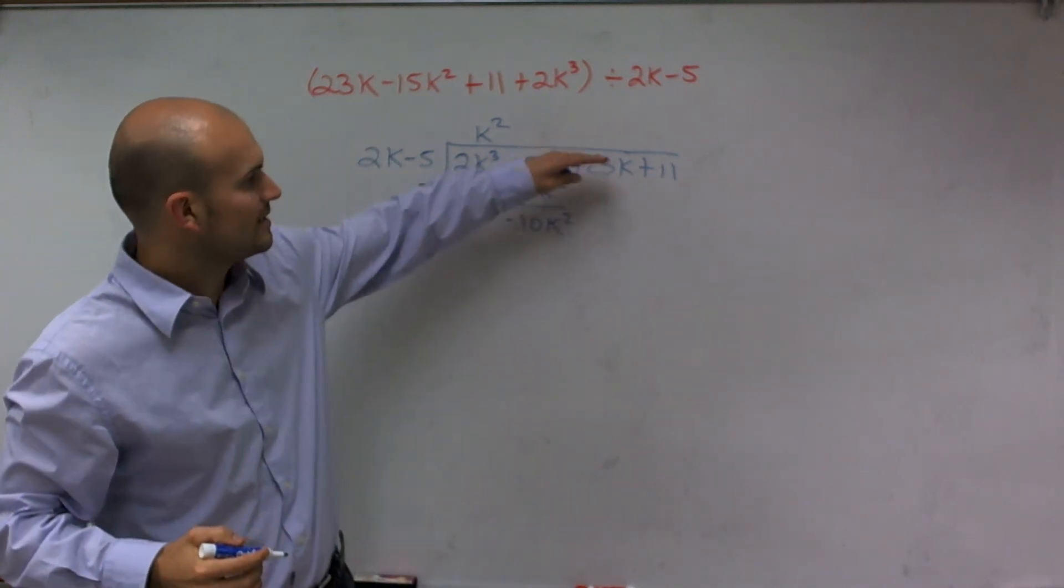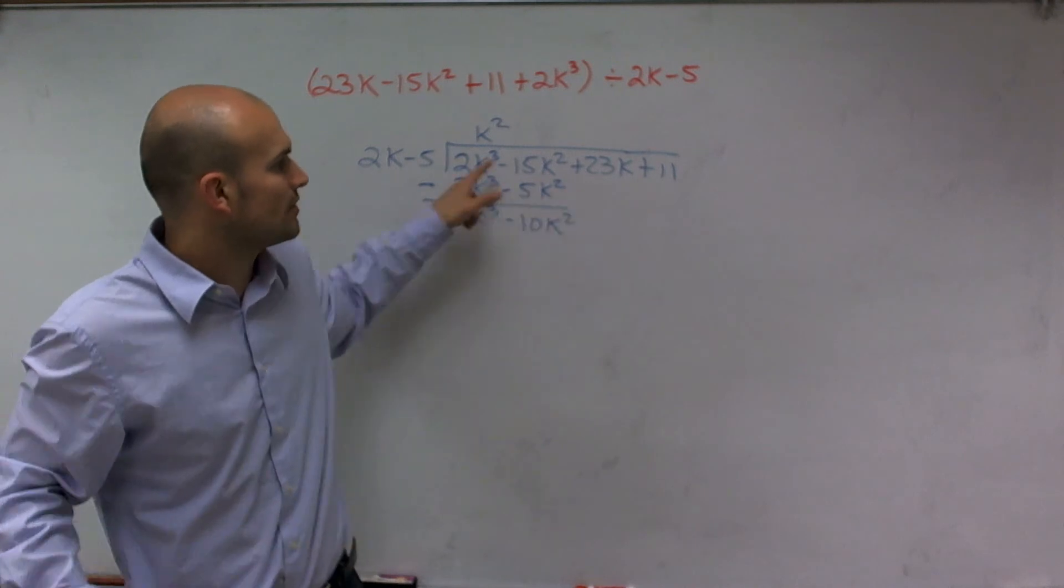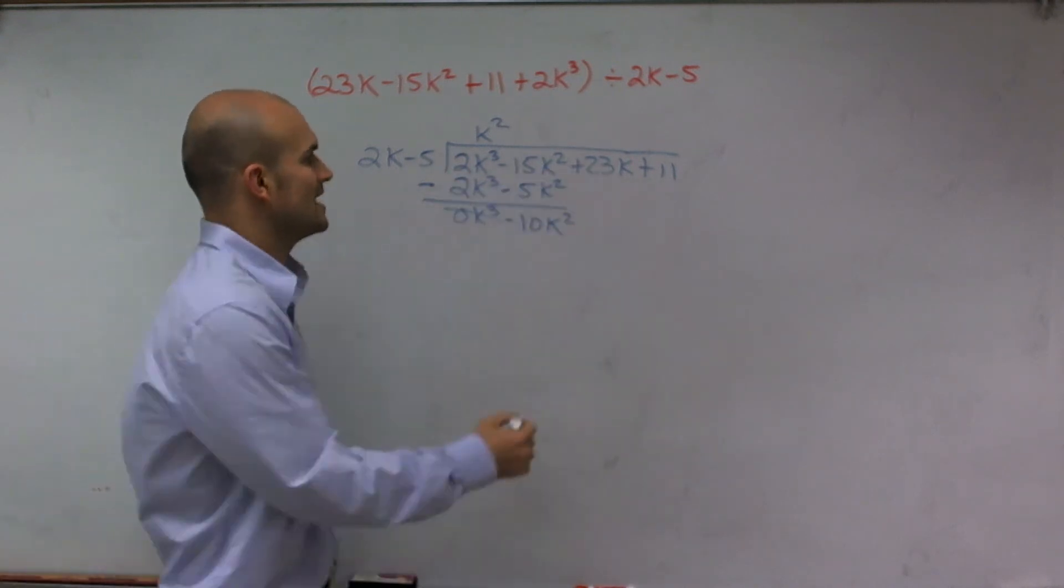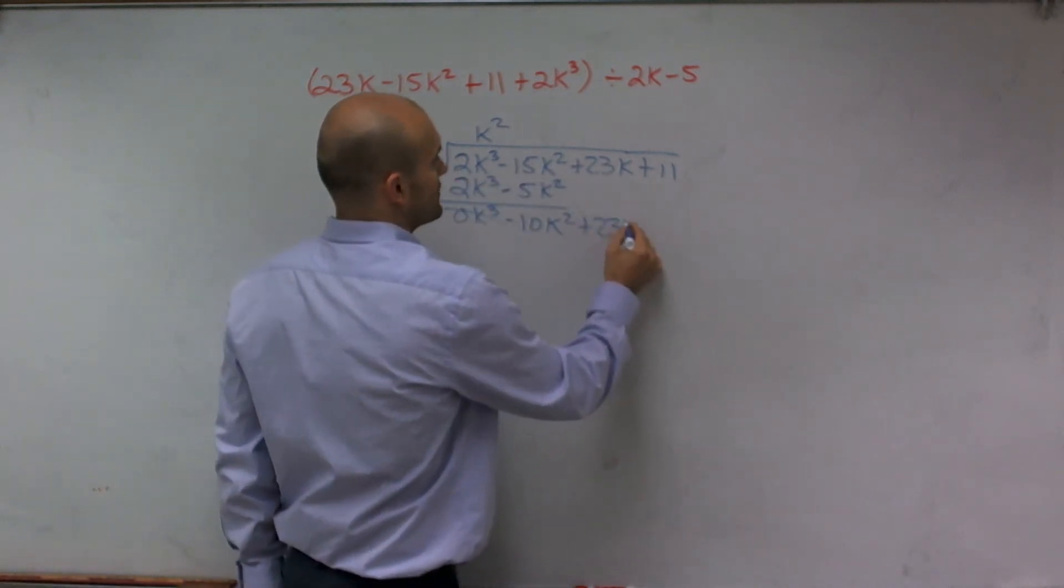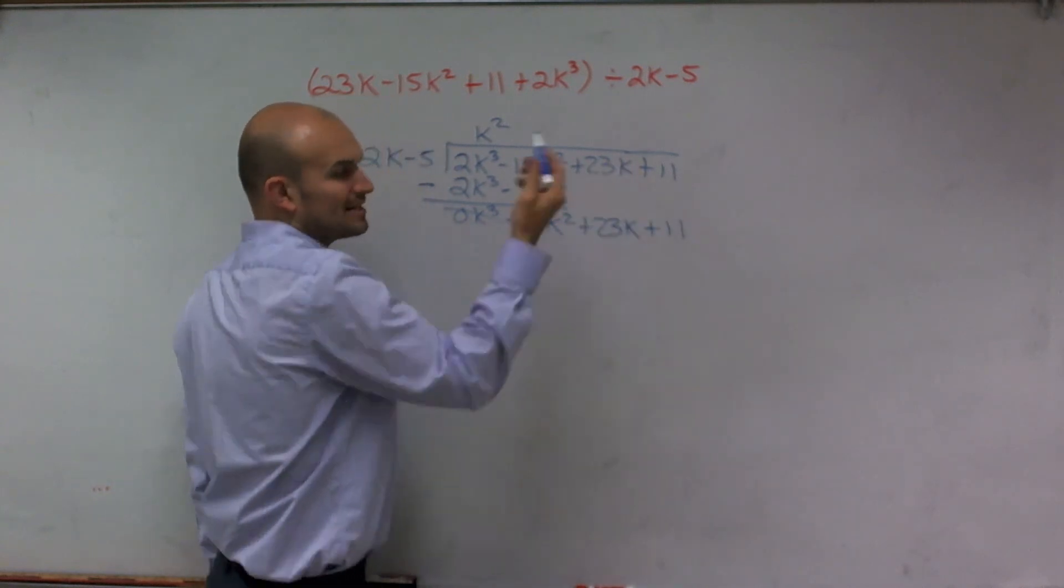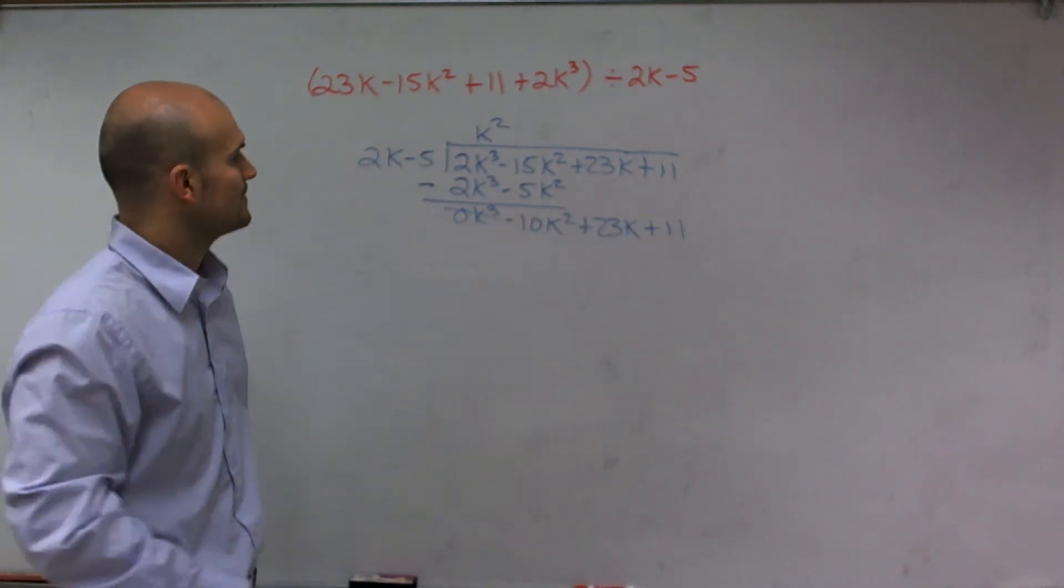Now, we can say that we can bring these down because there's no other numbers down there. So you can just kind of bring these down. So we have plus 23k plus 11 because I'm really subtracting them from 0, so they're just going to be there.